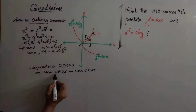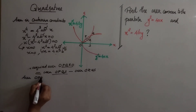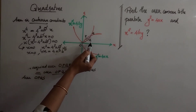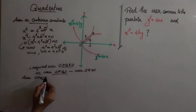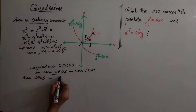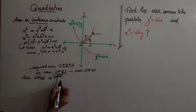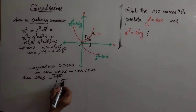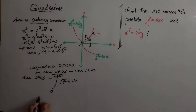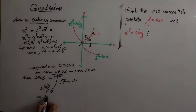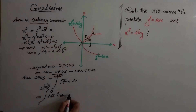We first find the area OPQS. Here y² = 4ax is the equation of the parabola, so y = √(4ax). The limits of integration go from 0 to 4a^(1/3)·b^(2/3). The integral is ∫₀^(4a^(1/3)b^(2/3)) √(4ax) dx = ∫₀^(4a^(1/3)b^(2/3)) 2√a · x^(1/2) dx.